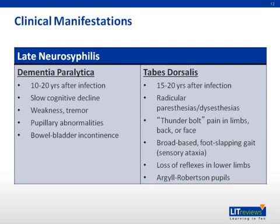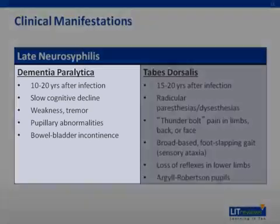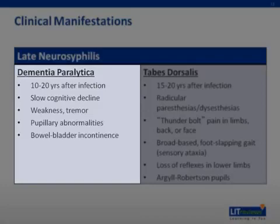Late or tertiary neurosyphilis typically presents in one of two ways: dementia paralytica or tabes dorsalis. Both are associated with spinal fluid abnormalities consisting of one or more of the following: a positive VDRL, an elevated protein, or lymphocytic pleocytosis. Dementia paralytica typically occurs 10 to 20 years after the initial infection. It is characterized by a slow deterioration of cognitive function affecting memory, insight and judgment, and language, as well as weakness in the arms or legs, a tremor, pupillary abnormalities, and loss of bowel or bladder control.